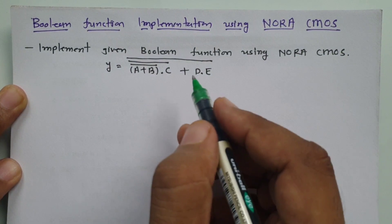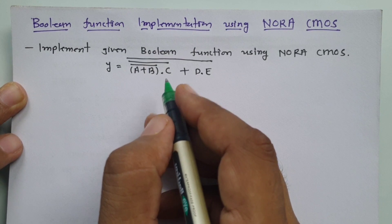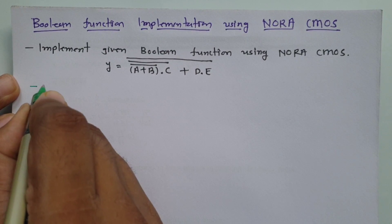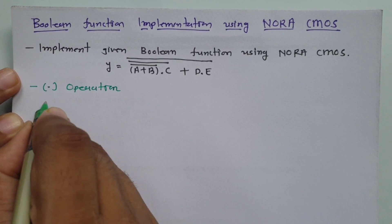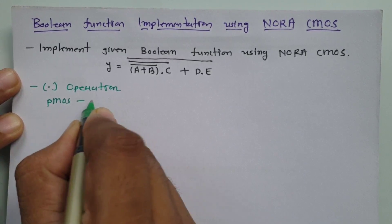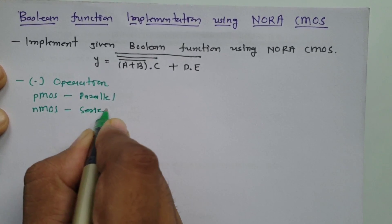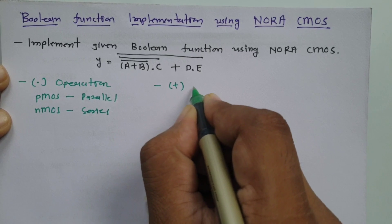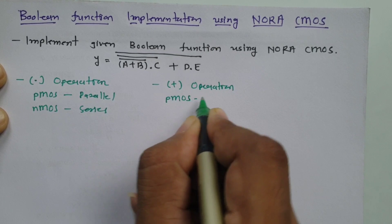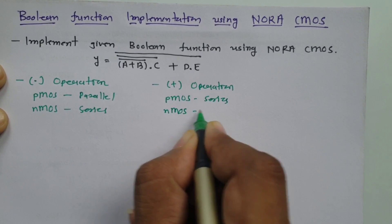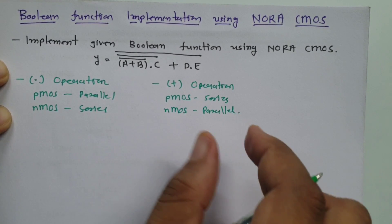Before explaining the basic logic of Nora CMOS, let me explain the operations we are dealing with. For dot operation (AND), PMOS connection should be in parallel and NMOS connection should be in series. For plus operation (OR), PMOS connection should be in series and NMOS connection should be in parallel. These are the basic rules one should never forget for any CMOS circuit formation.